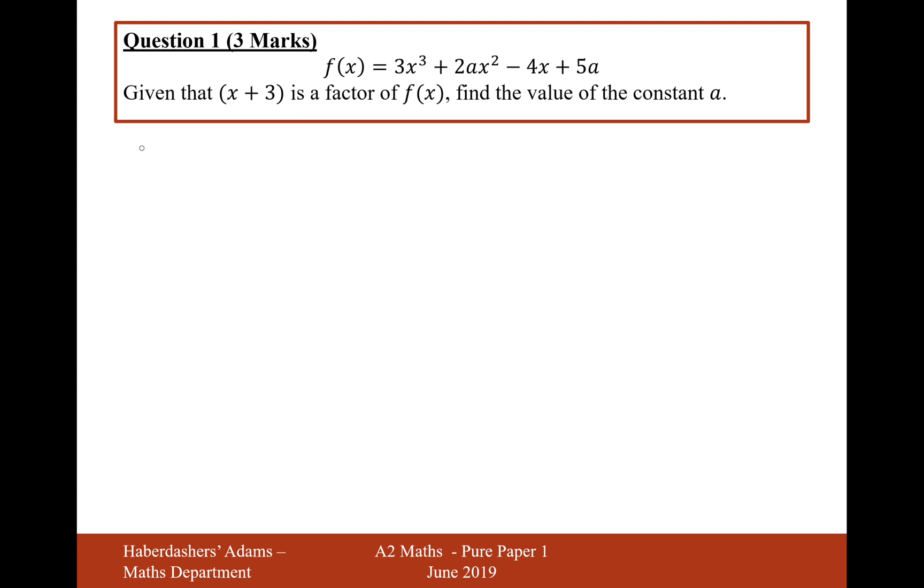By the factor theorem, and it's sensible to write all of this out, f(-3) will equal 0. It's the root of the bracket that will equal 0 when you substitute it in, because when you replace x with -3, that will make this bracket equal 0, so then the whole thing will equal 0. That's what it means to be a root or a factor.